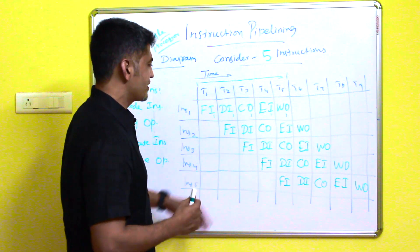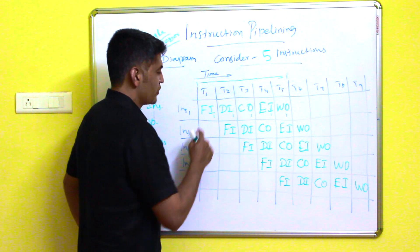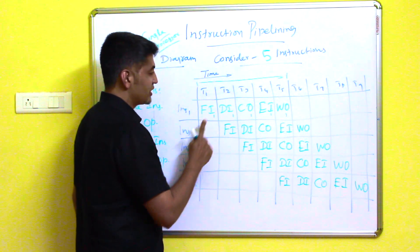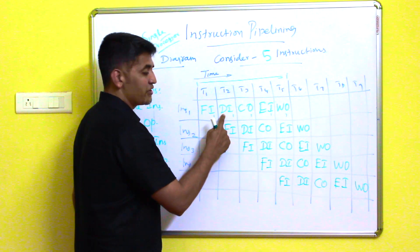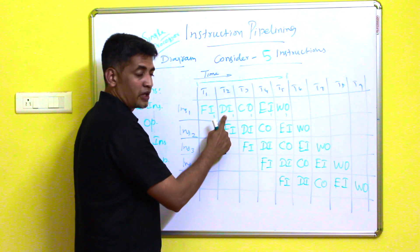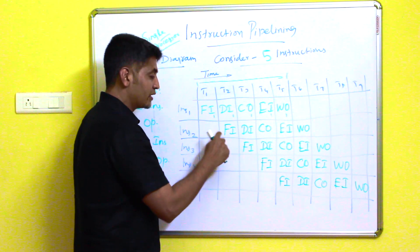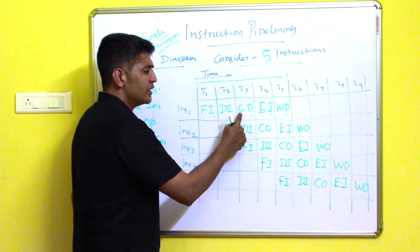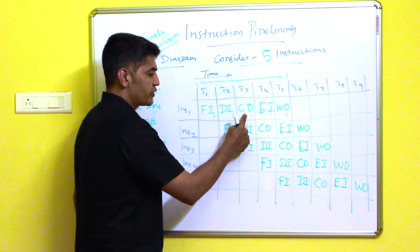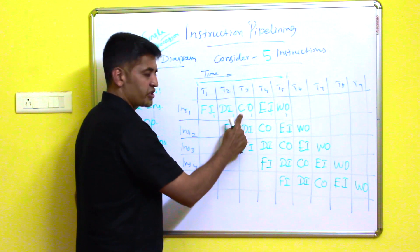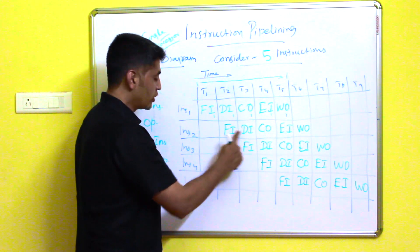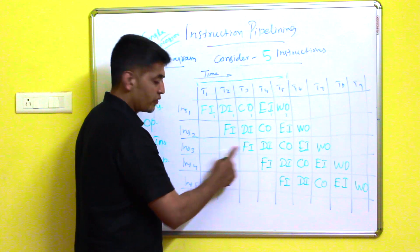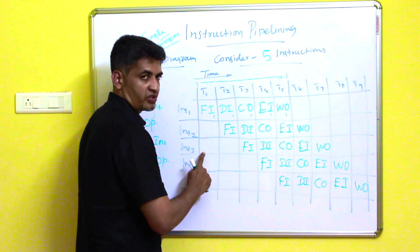At time t1, instruction one is fetched. At time t2, instruction one is decoded while instruction two is fetched. At time t3, the operand is fetched for instruction one, instruction two is decoded, and instruction three is fetched.